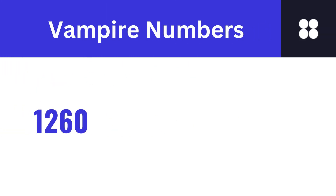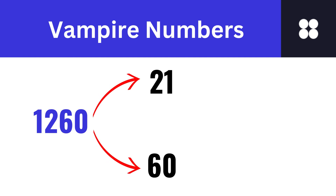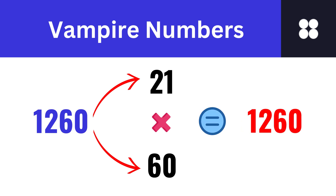Take the number 1260. Rearrange the digits 1260 into two numbers, or FANGs — that is 21 and 60. You can write the digits in any order. When you multiply 21 by 60, we get 1260, which is the original number. 21 multiplied by 60 is a permutation of the digits of the original number 1260.